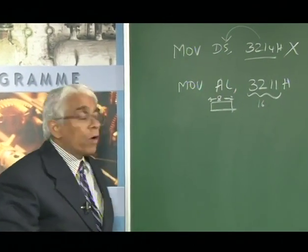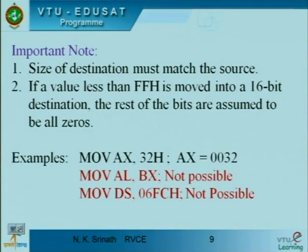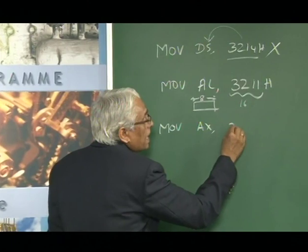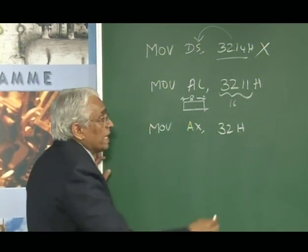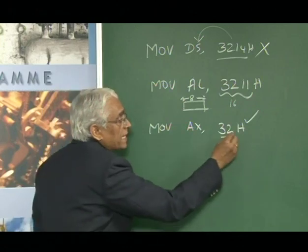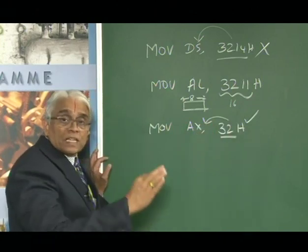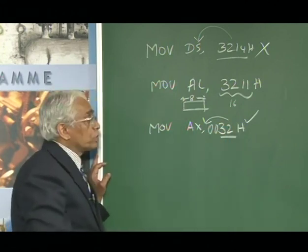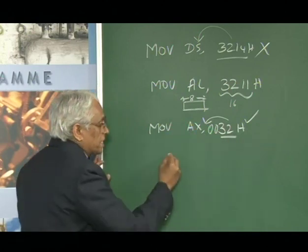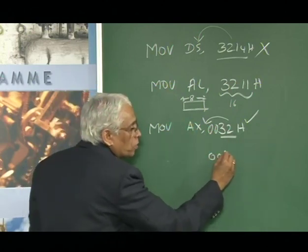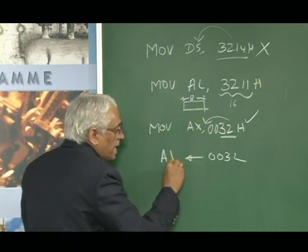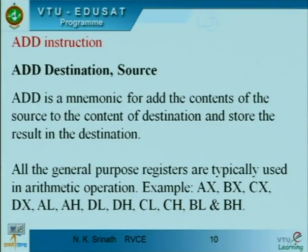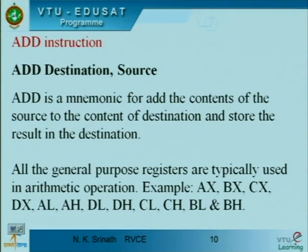Similarly, when moving data into AX register — for example, MOV AX, 32h — it is possible because the system considers the remaining higher-order 8 bits to be equal to 0 and moves 0032h into AX. So at the end of this operation, 0032h is stored in the AX register. These are important points to understand about the MOV instruction.